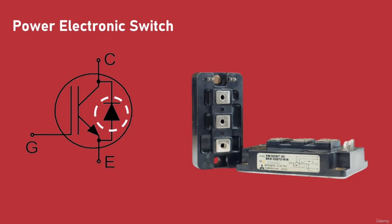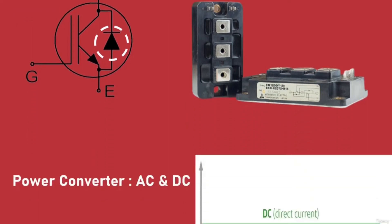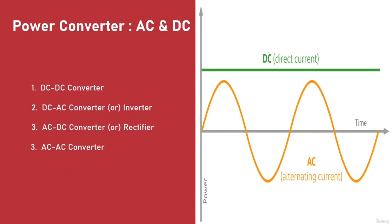The other commonly used semiconductor devices in power converters are the Metal Oxide Semiconductor Field Effect Transistor, or MOSFET as they are commonly called, and thyristors. The most common way to classify power converters is based on whether the input and output is AC or DC — that is, alternating current or direct current.